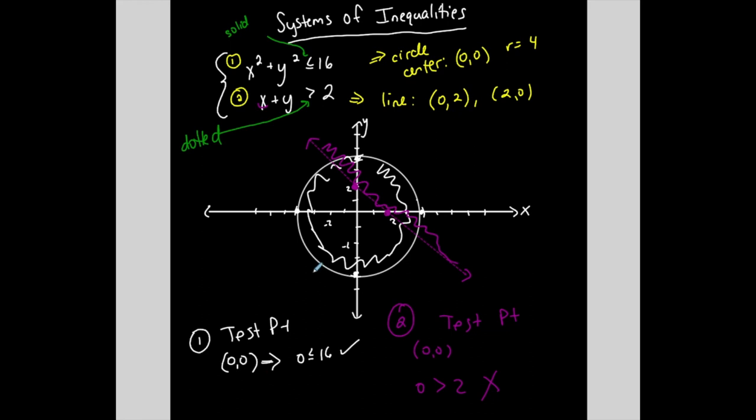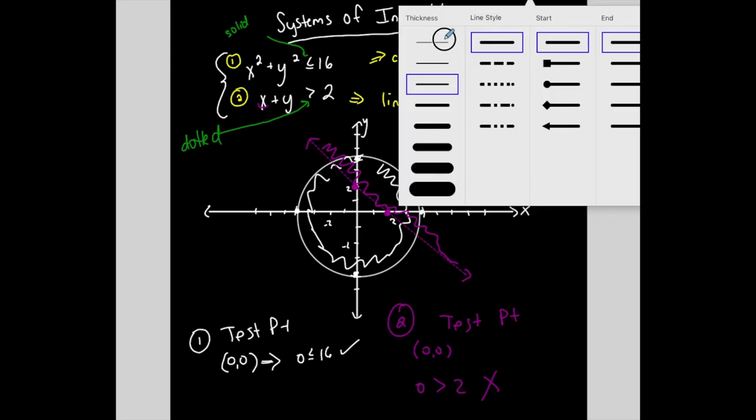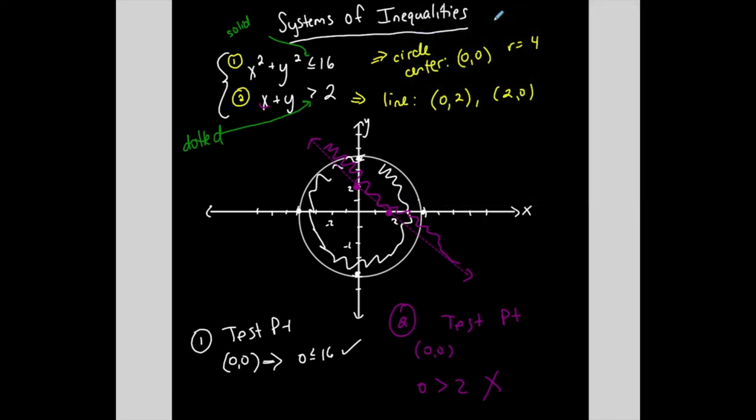Now, I'm not done, because the actual solution to the system is the intersection of the two shaded regions, which is why you don't want to go crazy shading. In this case, the intersection is just this part. Everything inside this little piece of the circle, not including the stuff on this line but including the stuff on the circle, are all solutions to the system. And therefore, I am finished. And it is a beautiful graph.